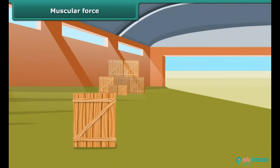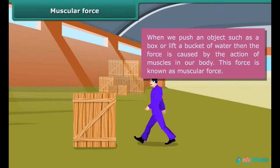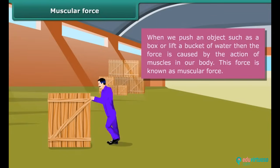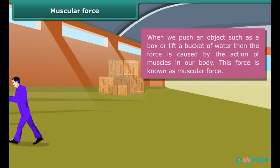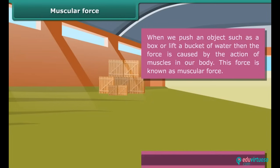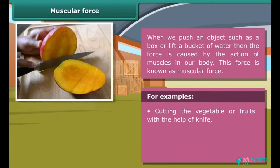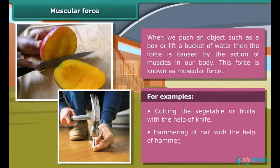Muscular force. When we push an object such as a box or lift a bucket of water, then the force is caused by the action of muscles in our body. This force is known as muscular force. Note that muscular force is always applied either directly through touch or indirectly with the help of a stick or piece of rope. For examples, cutting the vegetable or fruits with the help of knife, hammering of nail with the help of hammer, pulling a cart by horse.